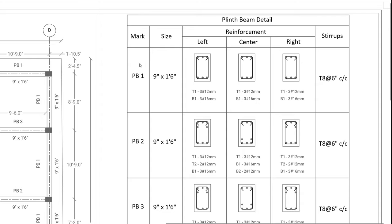The name, size, reinforcement, and stirrups — these are the Plinth Beam details. First, mark BB1. The size is 9 inches by 1 foot 6 inches. If you know the width and depth, you can identify the width and depth. So this is the left, center, and right.